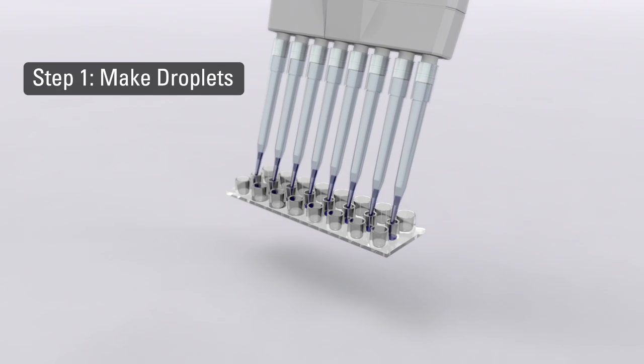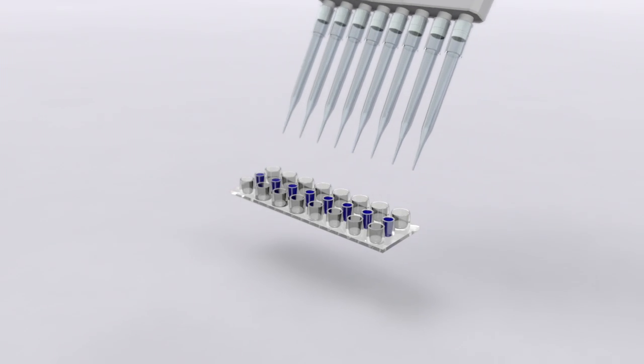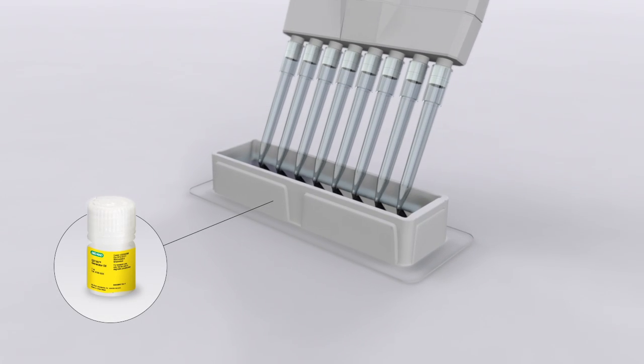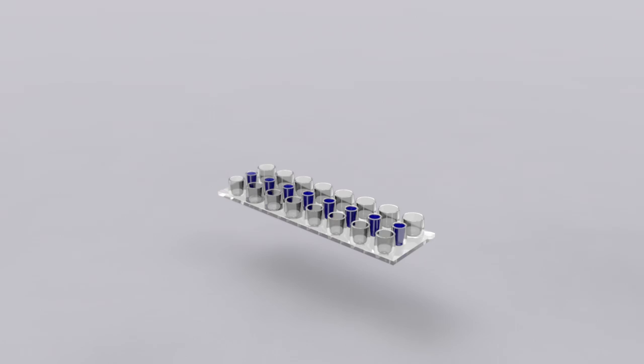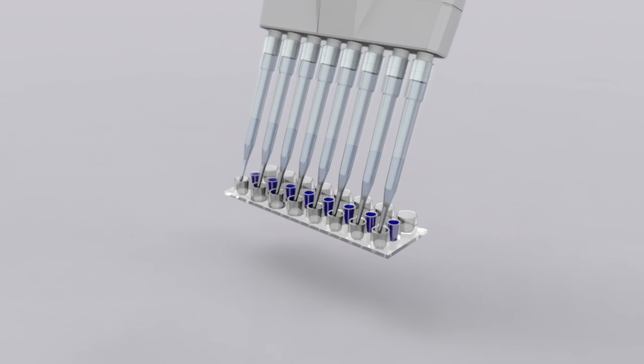First, 20 microliters each of 8 prepared samples are transferred to the Droplet Generation Cartridge. Droplet Generation oil is then loaded into the corresponding channels of the cartridge. There are 8 oil channels, one for each of the samples.